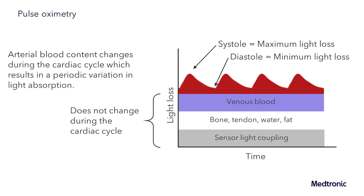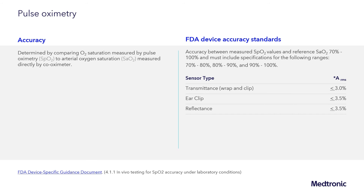Accuracy of a pulse oximeter is determined by comparing the oxygen saturation measured by the pulse oximeter to arterial oxygen saturation measured directly by a co-oximeter. The FDA device accuracy standards require that accuracy between the measured SpO2 pulse oximetry values and the reference SaO2 co-oximeter values be measured and accurate between the ranges of 70 to 100 percent and within the sub-ranges of 70 to 80 percent, 80 to 90 percent, and 90 to 100 percent. The method used to determine accuracy is the accuracy root mean square error, or ARMS.